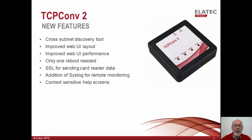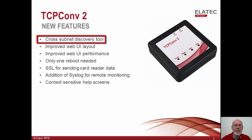Version 2 of our TCP Converter is our main design platform and will continue to evolve. Our vision is to provide solution partners with the ability to remotely configure and manage the Converter with minimal on-site involvement. Our initial version of the TC2 configuration discovery tool could only discover Converters on the same subnet as the tool itself. In this release, that tool has been enhanced to enable discovery of the converters on multiple subnets specified by the user.